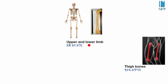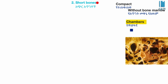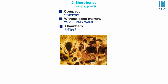Long bones are found in our upper and lower limbs. These bones contain bone marrow. The bone marrow has trabeculae and partitions.